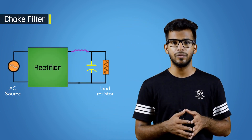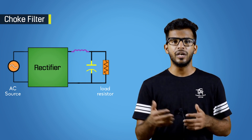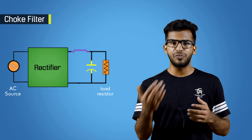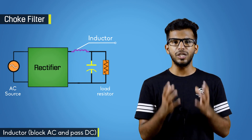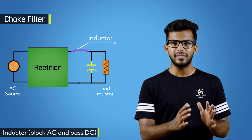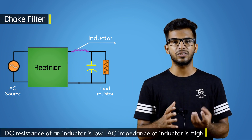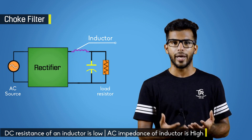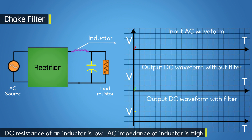In that case, we use a choke filter, commonly known as an L-section filter. When the pulsating DC signal from the rectifier circuit is fed into a choke filter, the ripples present in the DC voltage get filtered by a choke coil. The inductor has a special property to block AC and pass only DC, because the DC resistance of an inductor is low while the AC impedance of the inductor coil is high, so the AC ripple gets blocked.